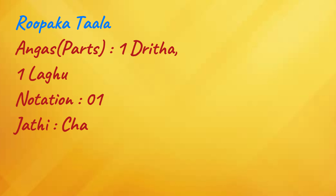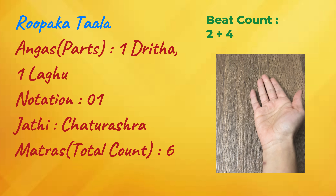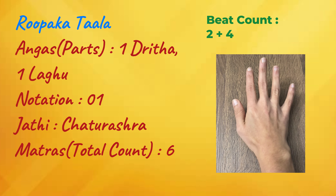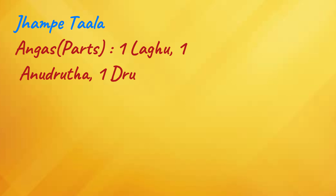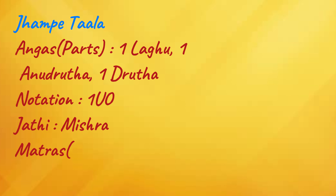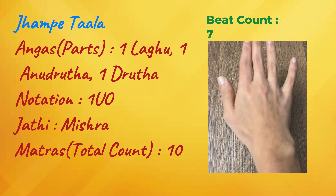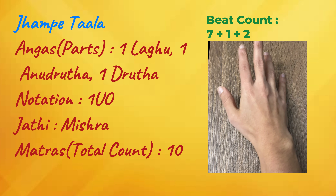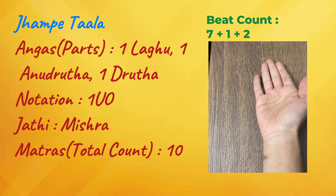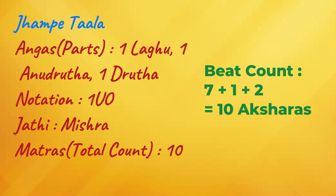The third Tala is called Rupaka Tala. The Angas of Rupaka Tala are one Drita and one Laghu. When you put Rupaka Tala in Chaturashra Jati, it will be six Aksharas total. The fourth Tala is called Jampai Tala. The Angas of Jampai Tala are one Laghu, one Anudrita and one Drita. The Laghu of Jampai Tala is put in Mishra Jati, making a total of 10 Aksharas.